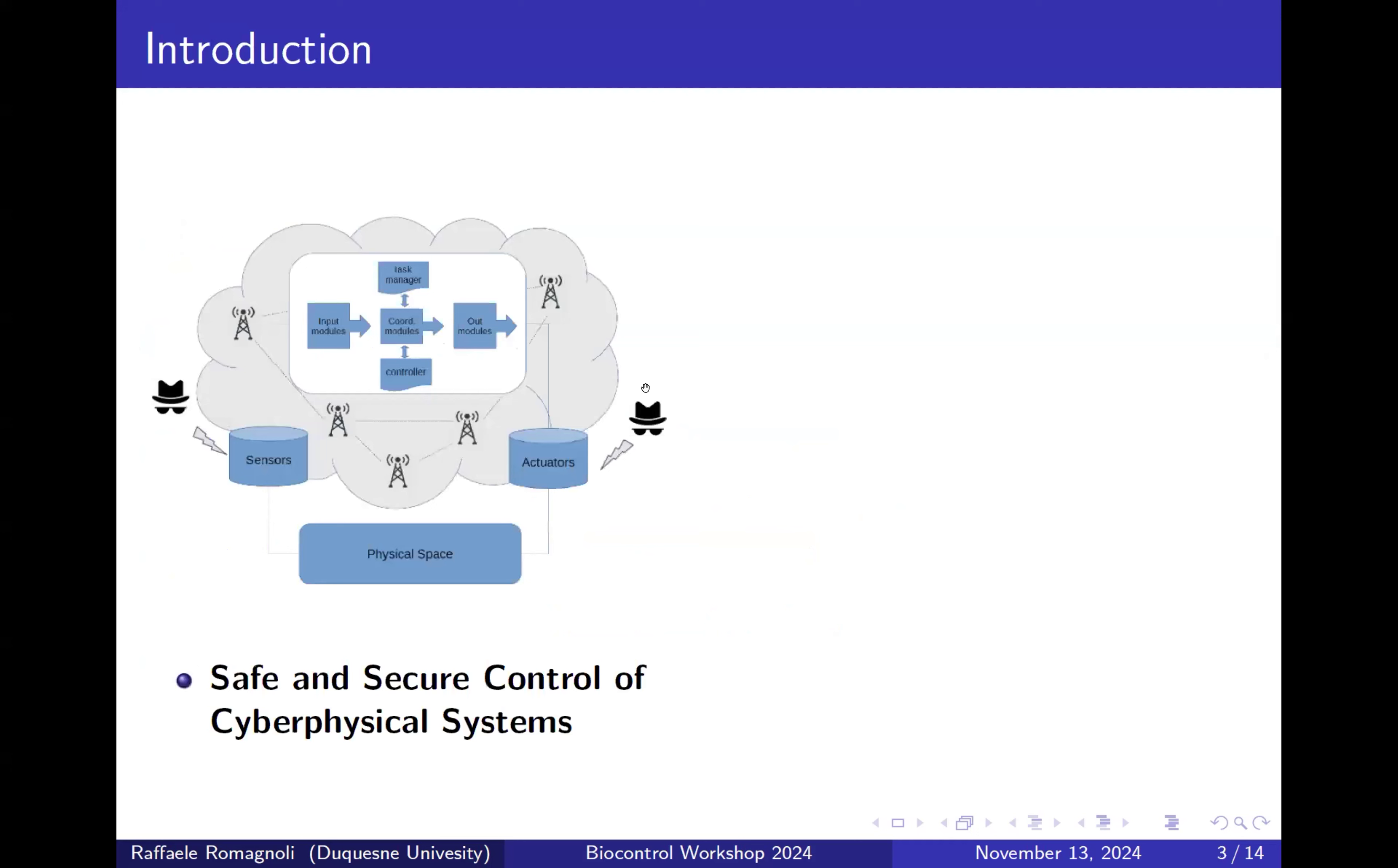So first of all, this is my main domain of research. I'm working on safe, secure control of cyber-physical systems where we have threats of attacks, and I developed resilient control strategies. I found that when you develop this kind of control, the countermeasures against attacks can have consequences on the physical system. Then I found this connection with cancer immunotherapy.